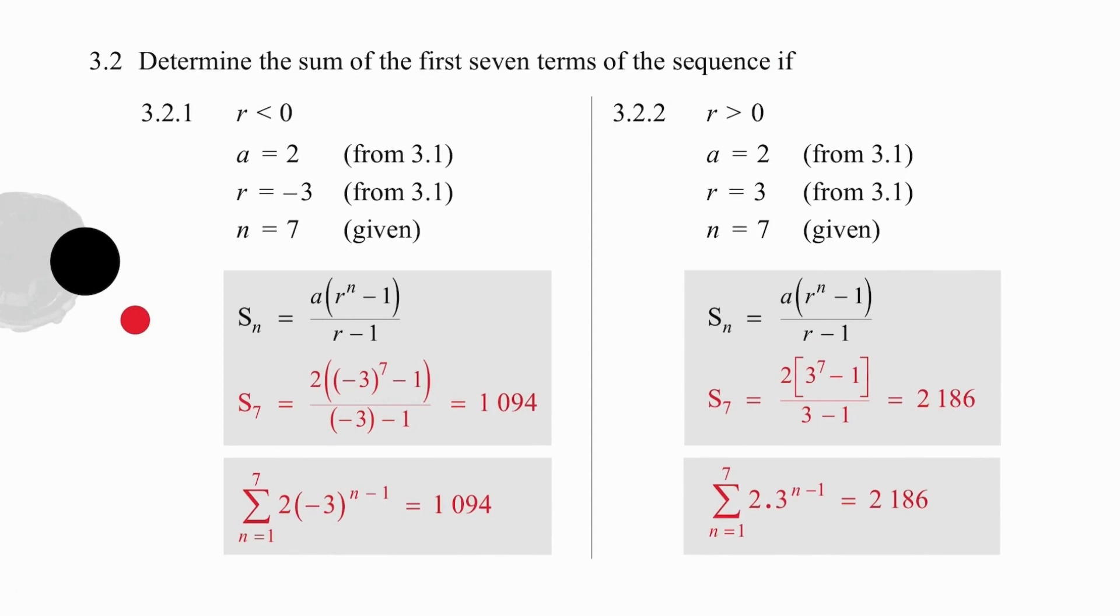In question 3.2, we are going to work out the sum of the first seven terms in two different situations. So we're going to work it out if r is less than 0, and we are also going to work it out if r is greater than 0. So it's a little bit repetitious. We're going to start in the first one with a equal to 2 and a negative 3 for the ratio, and then it's simply substituting into the formula to get the answer of 1094. Just for practice, we can write this into sigma notation, remembering that we have seven terms, that we simply write down the formula for the general term, and as we know the answer, we can write that down.